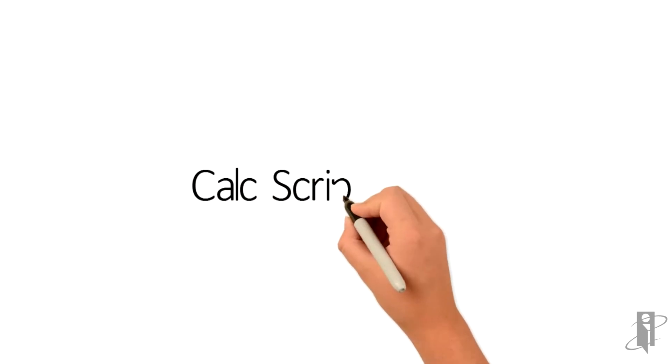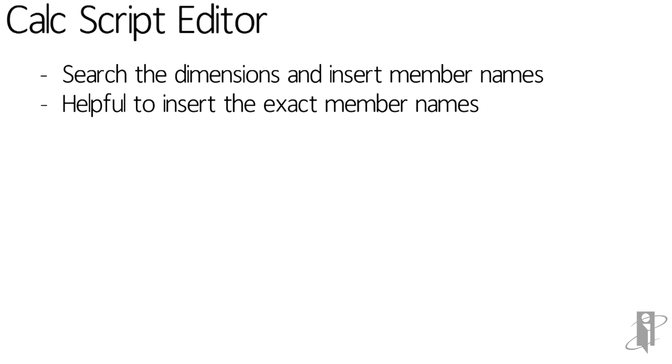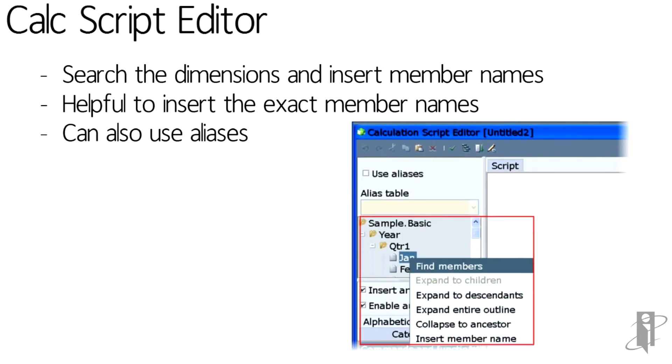Inside the Calc Script Editor, we can actually use a small version of the outline to find members and then insert them right into our Calc Script. We can also use aliases if we have alias tables set up.